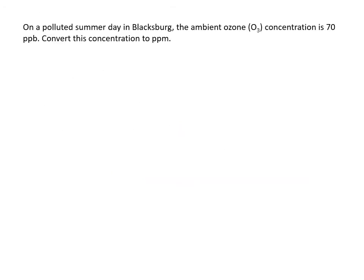On a polluted summer day in Blacksburg, the ambient ozone concentration is 70 ppb, parts per billion. Convert this concentration to ppm. We'll do this one two different ways. First of all, I can go straight, as I showed earlier, that if I want to go from 70 ppb to ppm, I know that we're talking about a difference of a factor of a thousand.